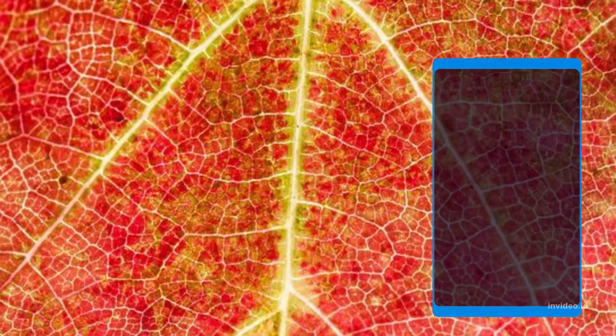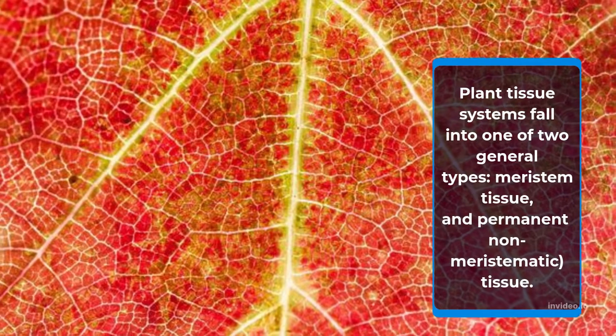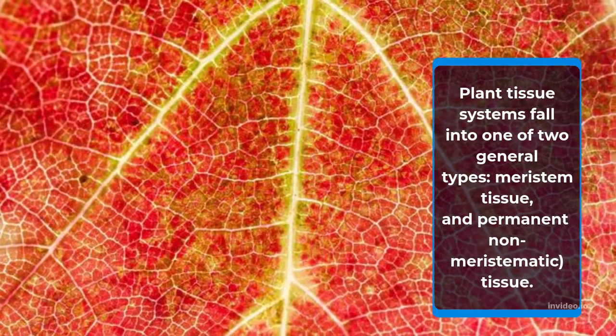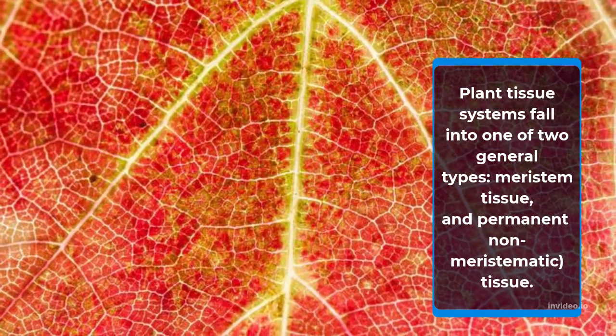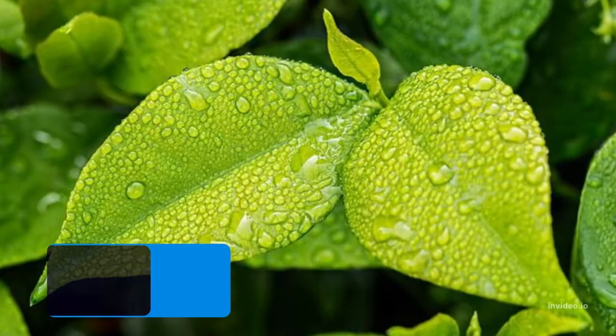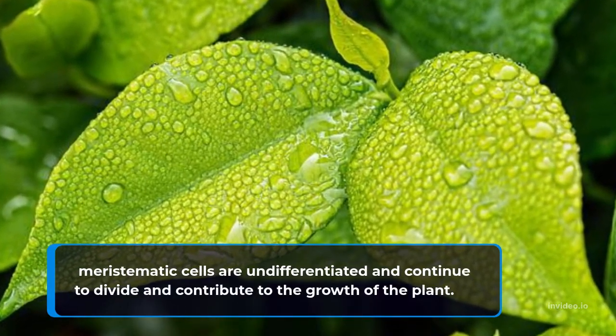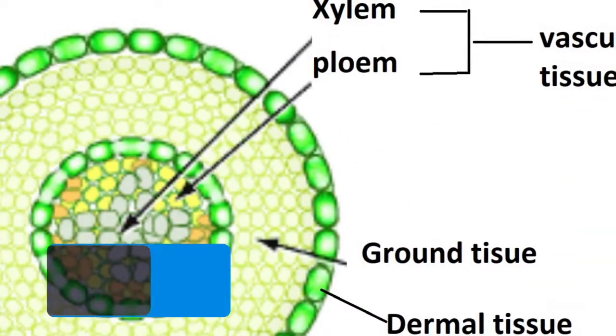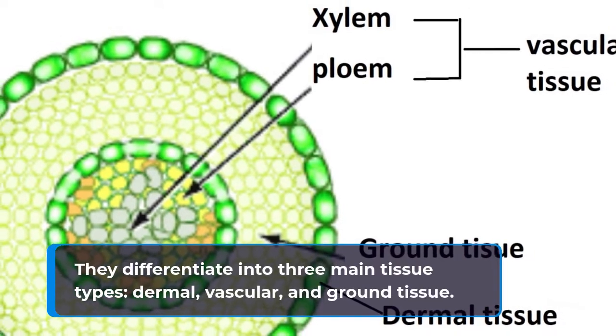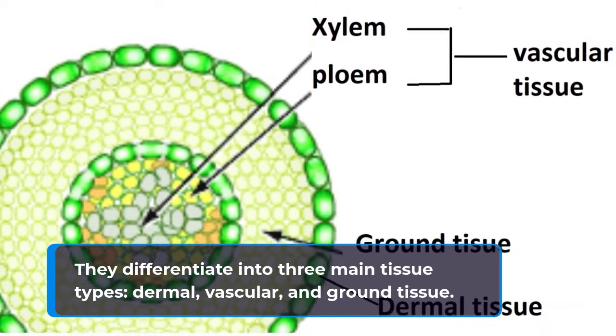Plant tissues. Plant tissue systems fall into one of two general types: meristematic tissue, and permanent, or non-meristematic, tissue. Meristematic cells are undifferentiated and continue to divide and contribute to the growth of the plant. In contrast, permanent tissue has completed its growth and differentiation and is usually incapable of meristematic activity. They differentiate into three main tissue types: dermal, vascular, and ground tissue.